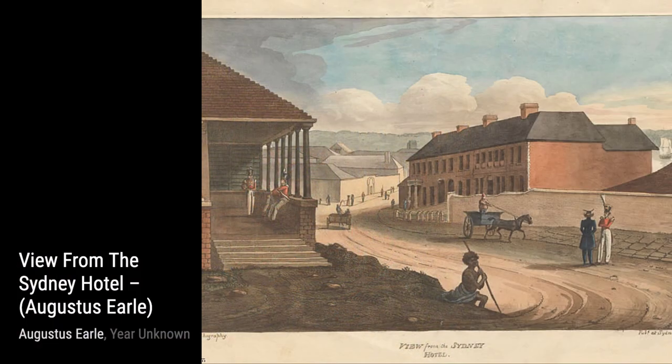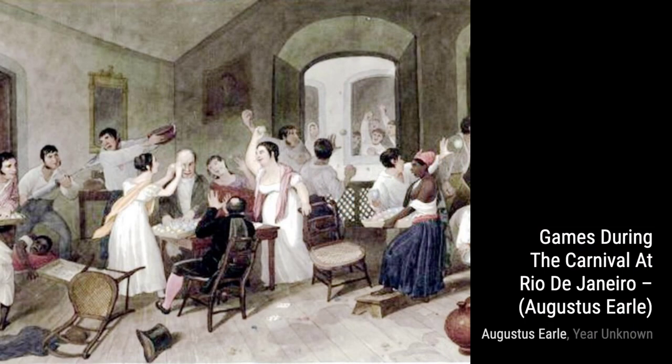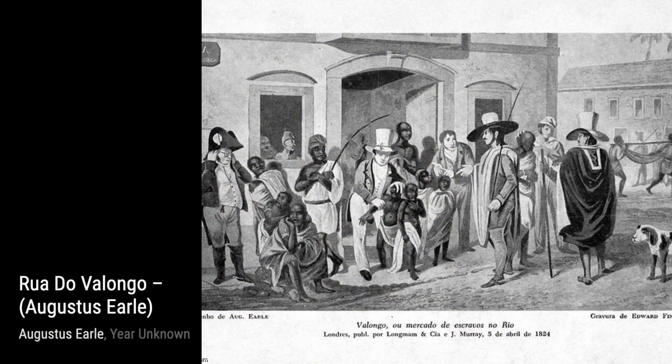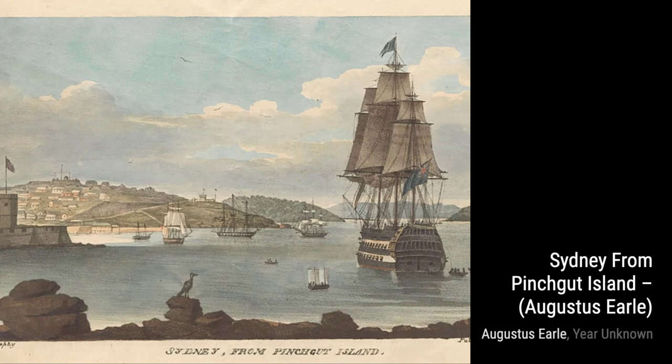In Punishing Negroes at Kalabuco, Earl sheds light on the harsh realities of slavery, highlighting the injustice and cruelty inflicted upon enslaved individuals. Lastly, we have Francis and Algernon Black. Earl beautifully portrays the elegance and grace of these individuals, capturing their unique personalities and charm.